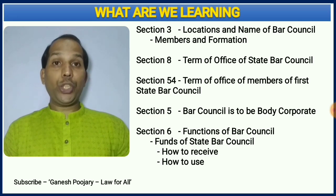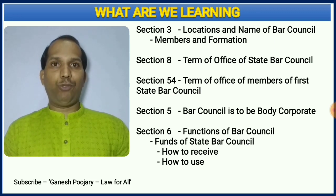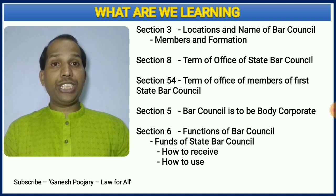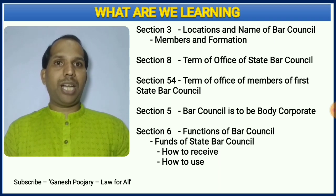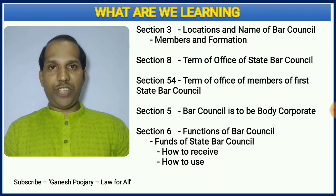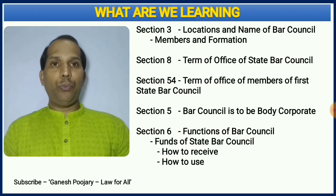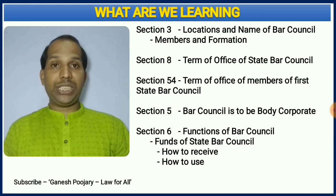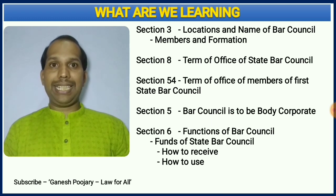Section 3 is about locations and name of bar councils, and there we are discussing about members and formation also. Section 8 discusses about the term of office of the state bar council. Section 54 discusses about the term of office of the state bar council which is formed for the first time. Then we have section 5 which discusses about bar council as a body corporate, and the last section is section 6 where we are going to discuss the functions of the state bar council, including how funds are received and how exactly they are spent.